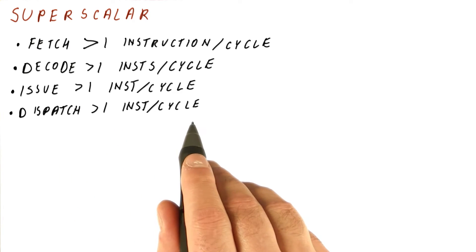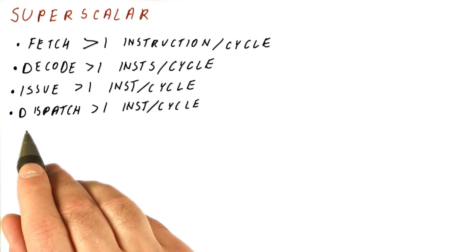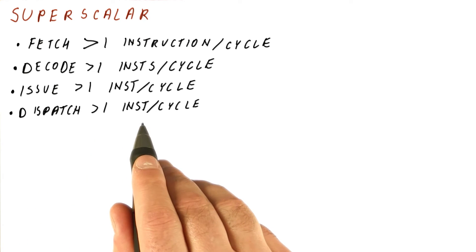Now, the problem usually is that you have many more adds than multiplies, for example. So if you really want to finish more than one instruction per cycle and do that over many cycles, probably we would have to have something like two add units and a multiplication unit so that even if we have only adds to do, we would be able to issue and dispatch two per cycle on average.